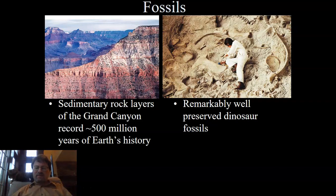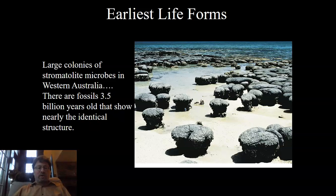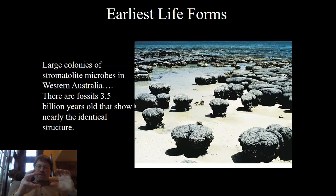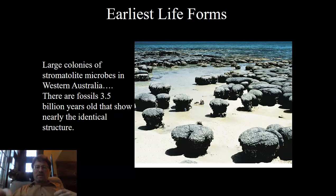The earliest life forms on Earth are thought to be, from the fossil record, about three and a half billion years ago. There are fossils where you can see the shape of the creatures, and they look just like these stromatolite microbes that still exist today in Western Australia. These stromatolite microbes are similar to creatures that existed three and a half billion years ago.